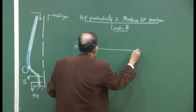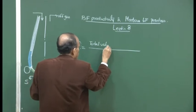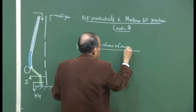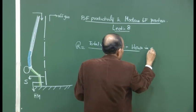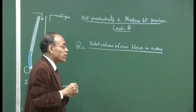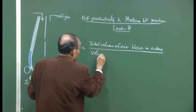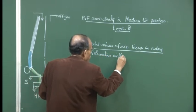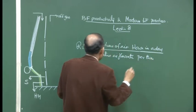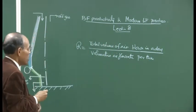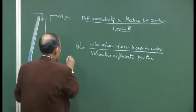The total volume of air blown in a day has units of meter cube per day, and this is the volumetric air flow rate per ton of hot metal — also known as the blast rate. So the unit of R becomes tons of hot metal per day.